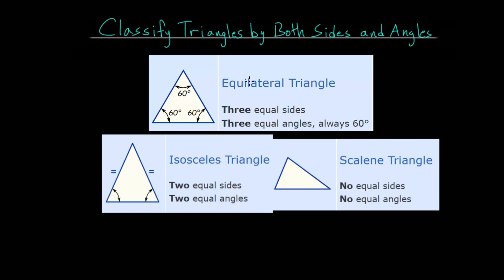An equilateral triangle has all equal sides and all equal angles — all of the side lengths are equal, and all three angles are equal. So it could be a triangle with length 4, 7, or 12 on each side — it doesn't matter, as long as they're all the same. In fact, each angle will always be 60 degrees when the triangle is equilateral, which makes sense since the angles in a triangle add up to 180 degrees.